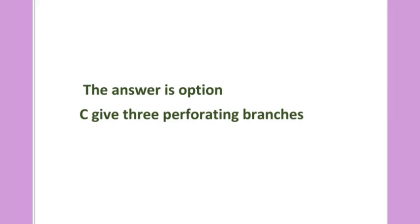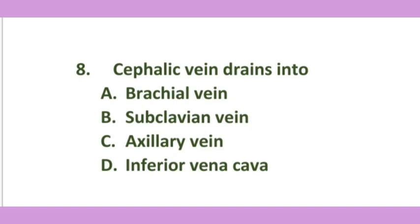Gives three perforating branches. Cephalic vein drains into: brachial vein, subclavian vein, axillary vein, or inferior vena cava.